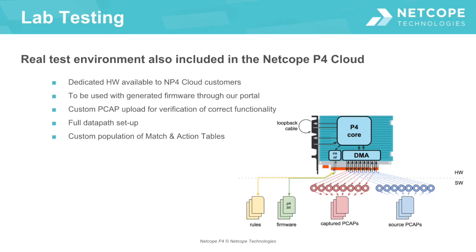Everything remains under the customer's control, including population of match and action tables. In other words, the NP4 cloud service covers the complete workflow for unbeatably fast and high-level P4-based development of a programmable 100Gbps solution. To sum it up, using NP4 lowers development cost and shortens time to market, which makes product launch more effective.